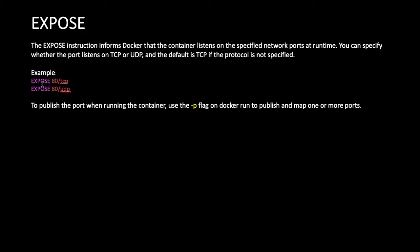For example, if we expose port 80 with TCP protocol, the running container will listen on port 80 via TCP. When we use the docker run command with the -p option, it links the Docker host port to the container port. If the port is not opened via the EXPOSE instruction, that port mapping will not happen.